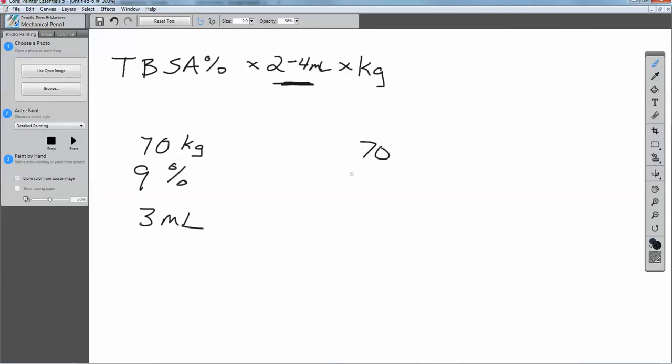So, what you're going to end up doing is 70 times 9, and that's going to give you, 9 times 7 is 630. So, we'll put that on there. Then we're going to take that 630, and we're going to multiply it by 3.